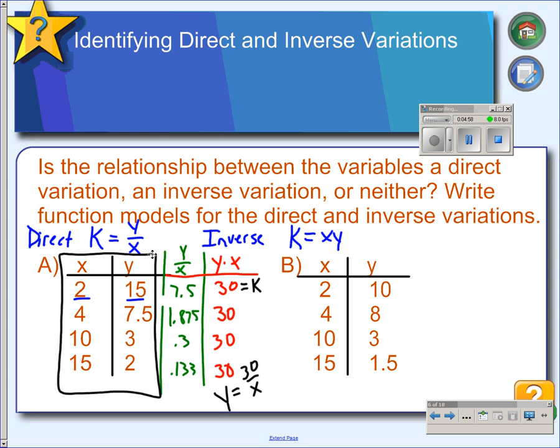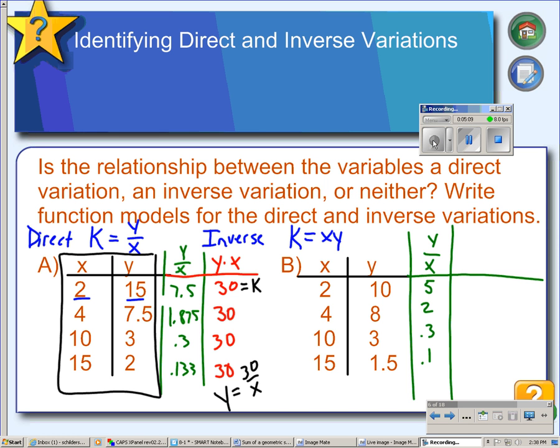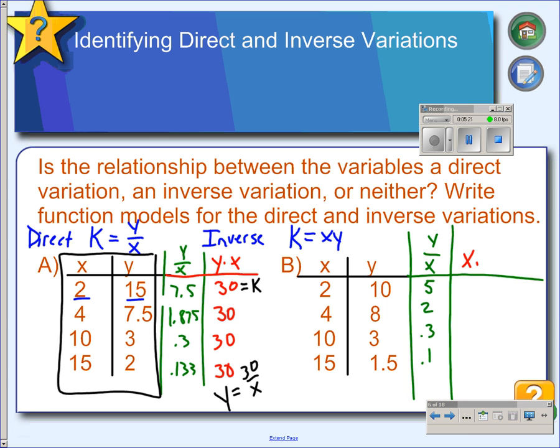So let's try the same thing for example b. First thing we'll do is divide y by x for each pair in the table. And when I divided each pair, I got different answers each time. Since this did not come out the same, then this is not a direct variation equation. So now we will check to see if it's inverse by multiplying x times y.